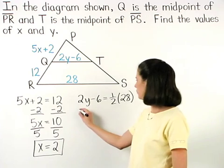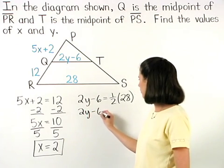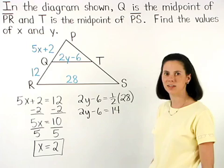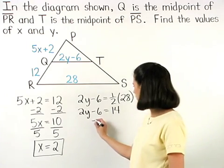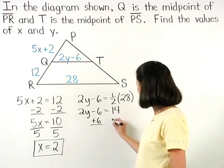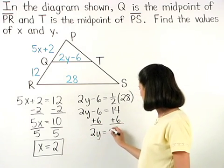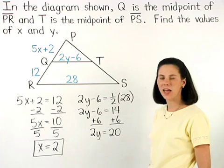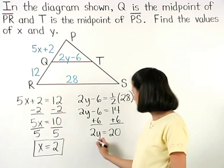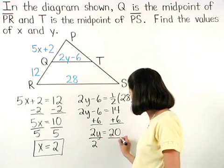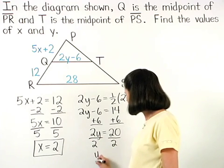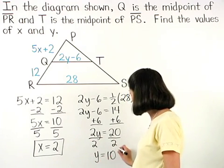So we have 2Y minus 6 equals 14. And adding 6 to both sides, we have 2Y equals 20. And dividing both sides by 2, we find that Y equals 10.